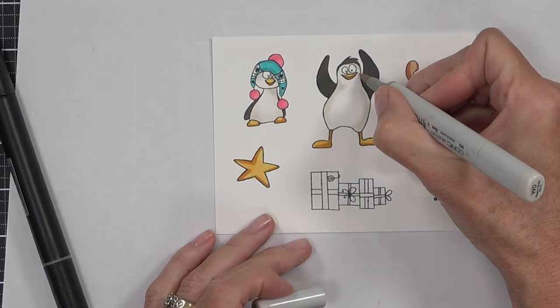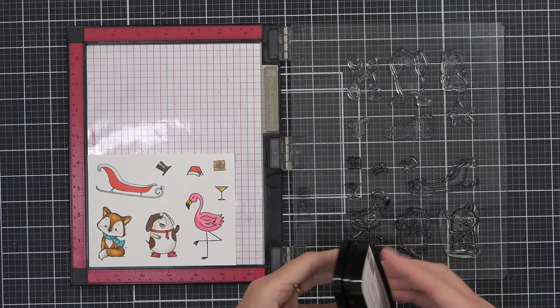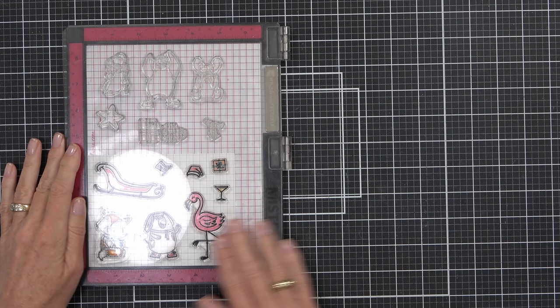Now I do have the stamps left in the lid of the Misti and after I've done all my coloring what I like to do is come back in and re-stamp them using a black pigment ink and this is just going to crisp up the edges of the images that I've stamped.